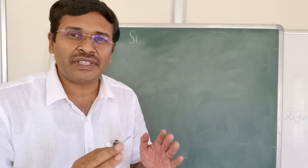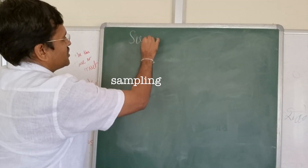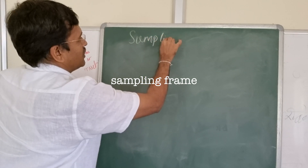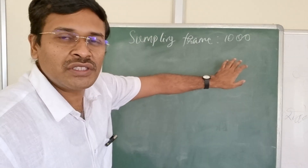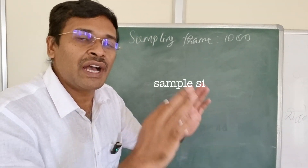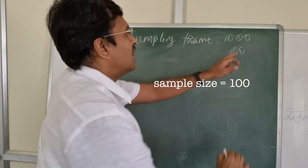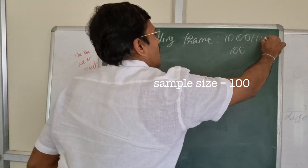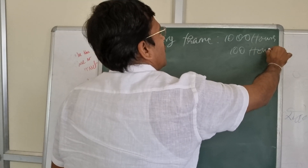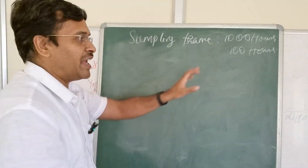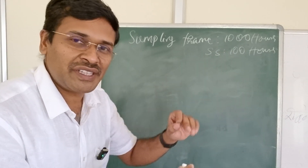I will explain this with the help of a sampling frame. We are having a population — that population is called the sampling frame. This sampling frame population is 1000. From this 1000 sampling frame, we have to take 100 as the sample. For example, we have 1000 houses and from those 1000 houses, we have to select 100 houses. This is our aim — this is our sample size. We can collect the sample by three methods.